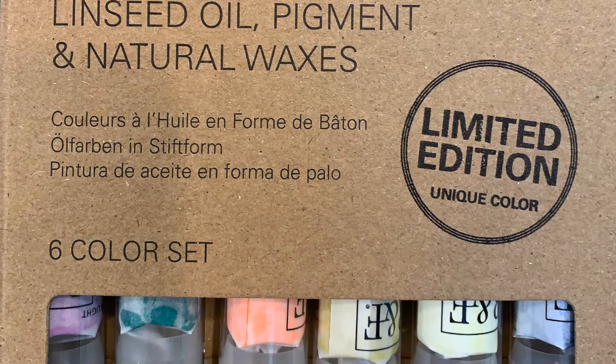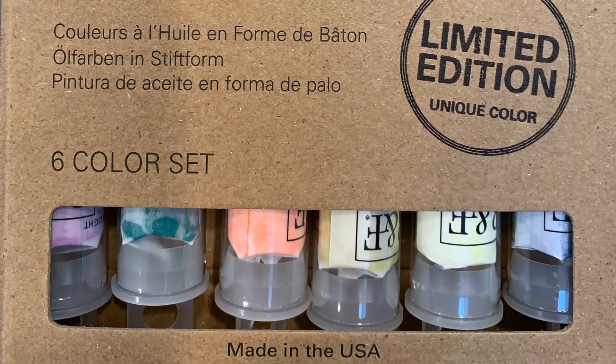R&F manufactures encaustic paint and pigment stick oil paint in Kingston, New York.